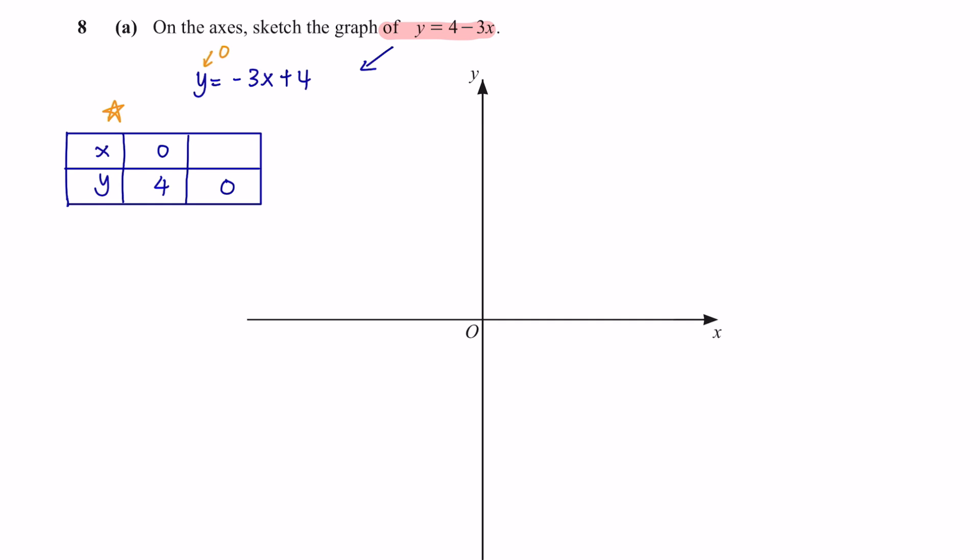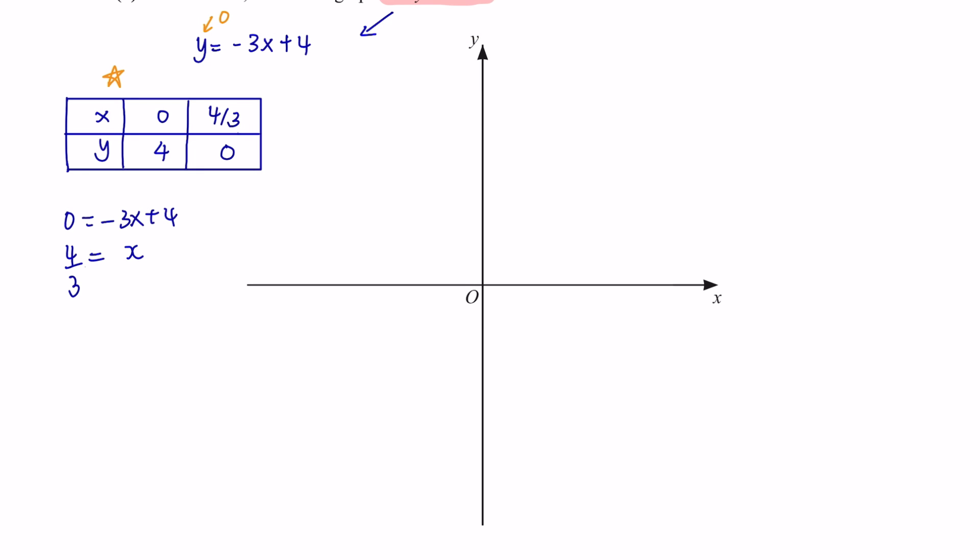And when y equals 0, the value of x is 4 over 3. So when x is 0, y is 4. And when y is 0, x is 4 over 3, somewhere around here. And just draw a straight line through both of these coordinates.